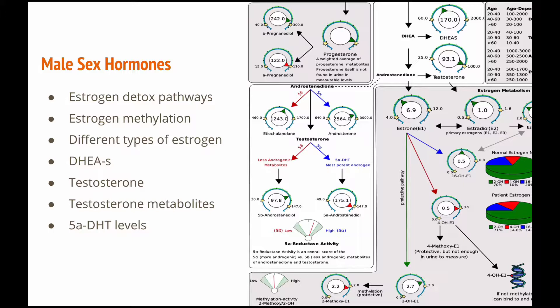The male sex hormone page is very similar. We've got the three different types of estrogens and how they're getting detoxified, and even with men we don't want it to be going down the red pathway because that can lead to things like prostate cancer. The same thing with testosterone metabolism — if it's going down the more androgenic pathway and having 5-alpha DHT elevated, that can lead to hair loss, acne, and in a worst case scenario things like prostate problems and prostate cancer.